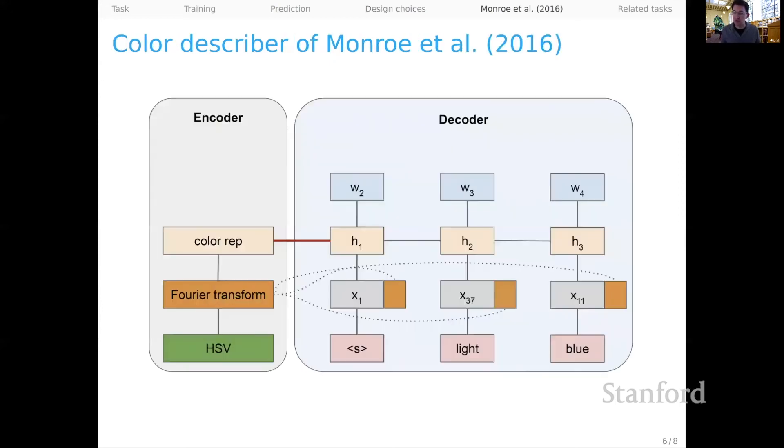And then there's one other modification that I want to mention because you'll see this as part of the homework and the system that you're developing. So we found that in Monroe et al. 2016, it was helpful to kind of remind the decoder at each one of its time steps about what it was trying to describe. So in more detail, we had HSV color representations as our inputs. We did a Fourier transform to get an embedding, and that was processed into a hidden state.